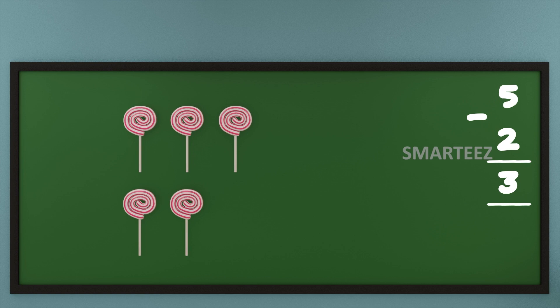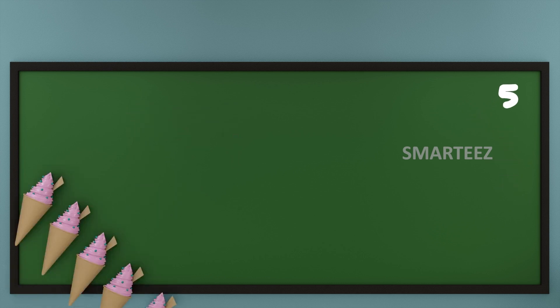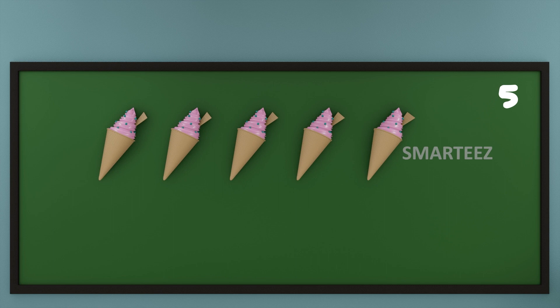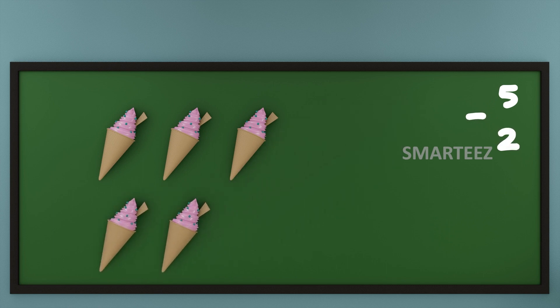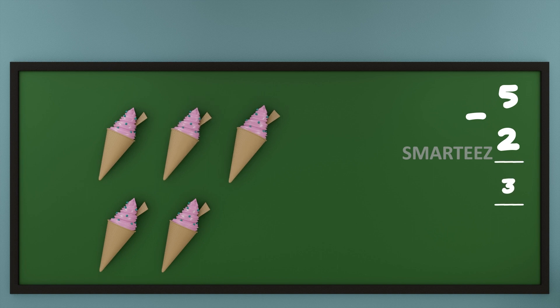Okay, let's try this with ice creams. Take a look. That's five ice creams in total. Let's subtract two ice creams out of it. That's one ice cream and that's the second ice cream. What we have left is one, two, and three ice creams.